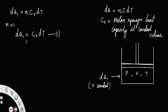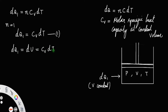The heat is supplied but it is entirely used for increasing internal energy. That is, dq1 = dU = Cv·dT. Let us call that Equation 1.